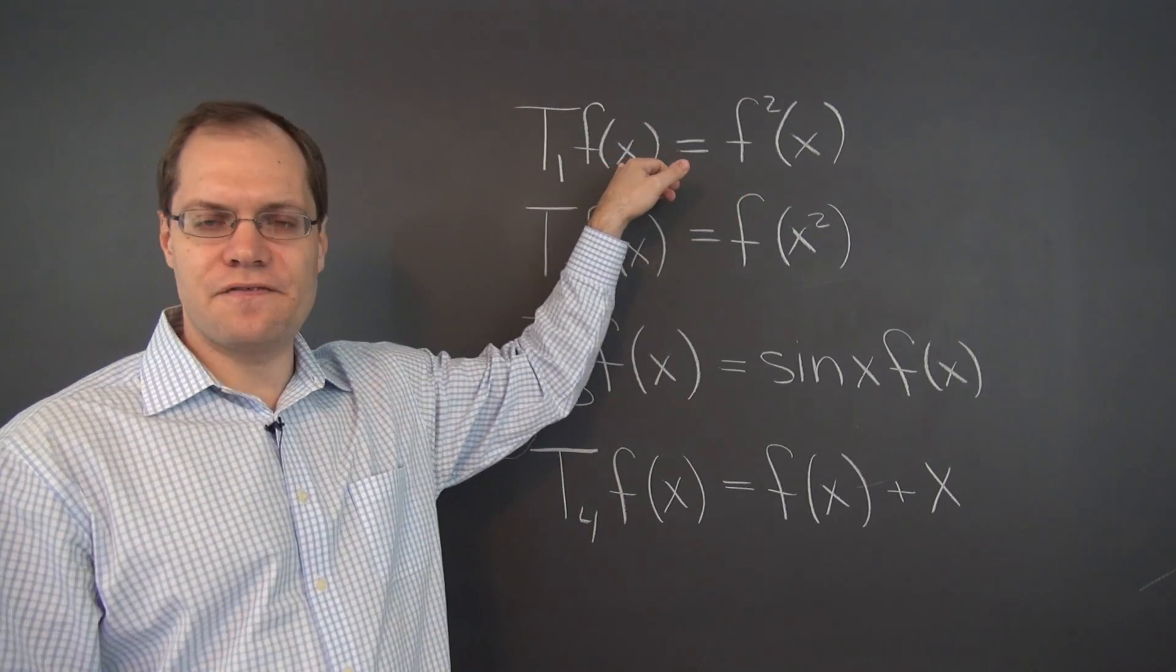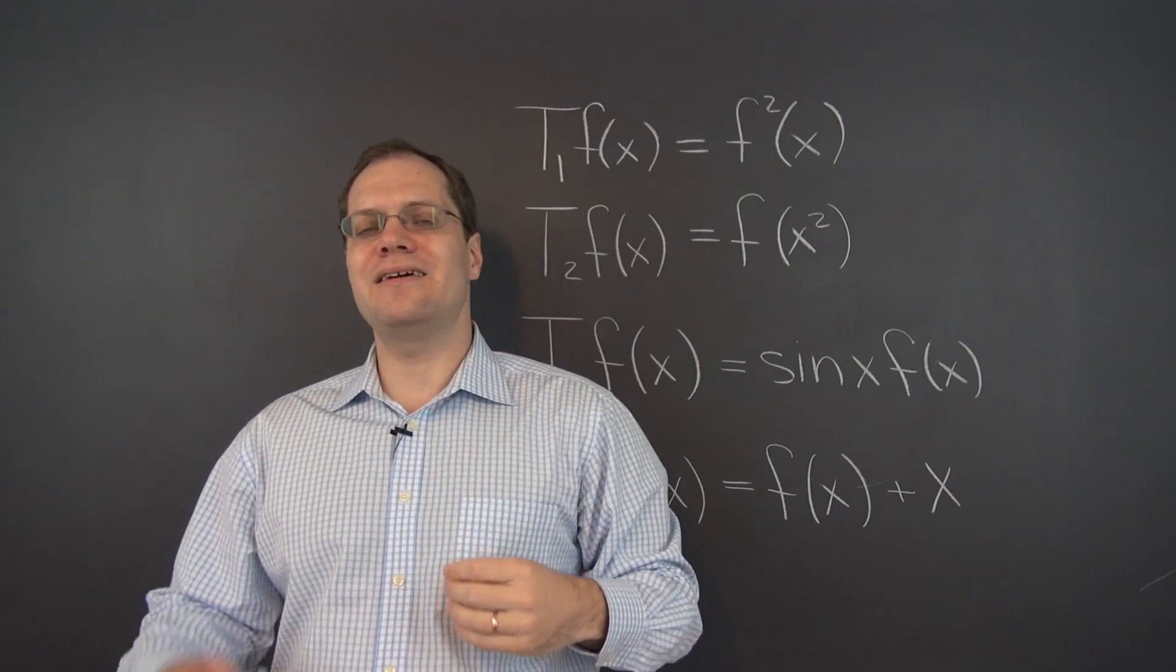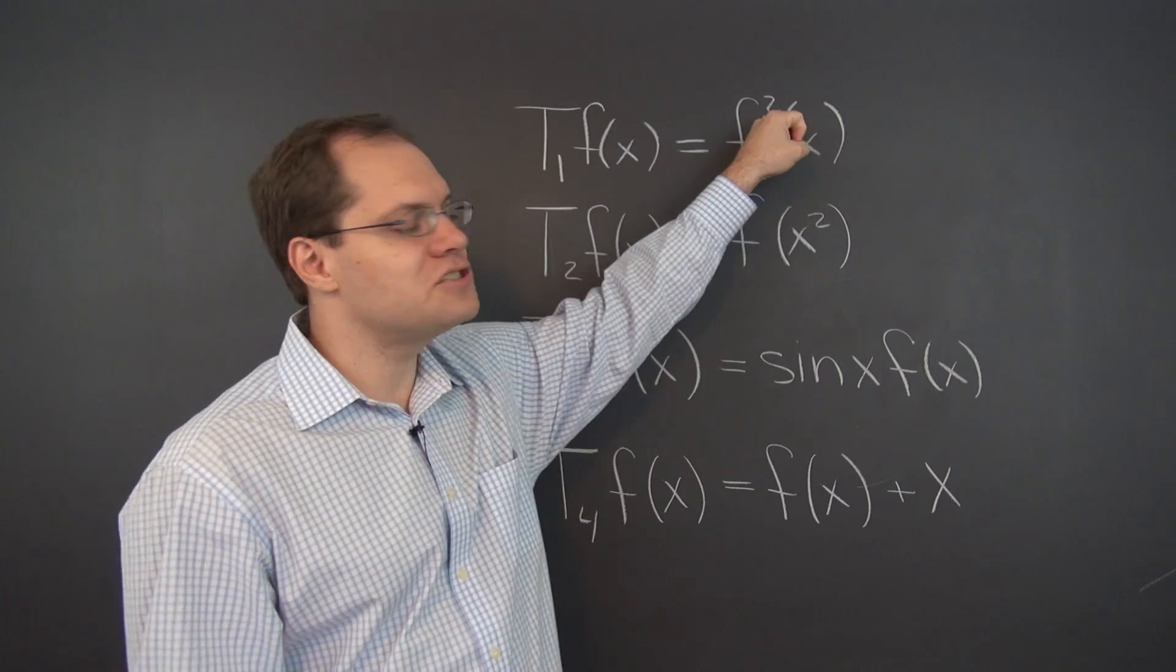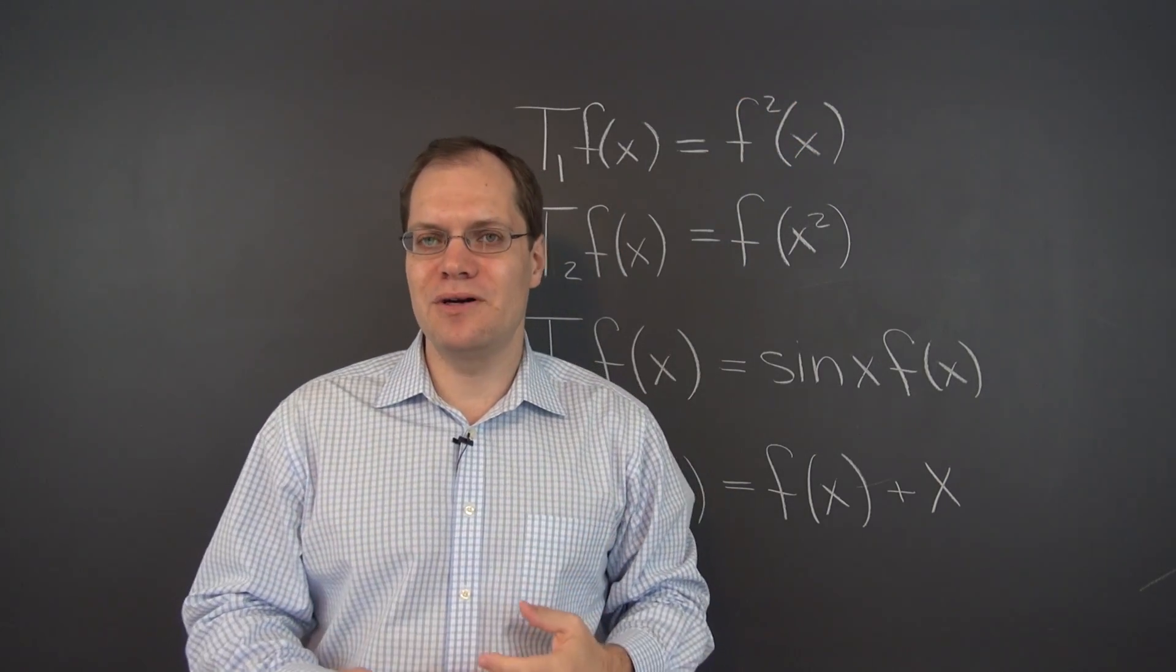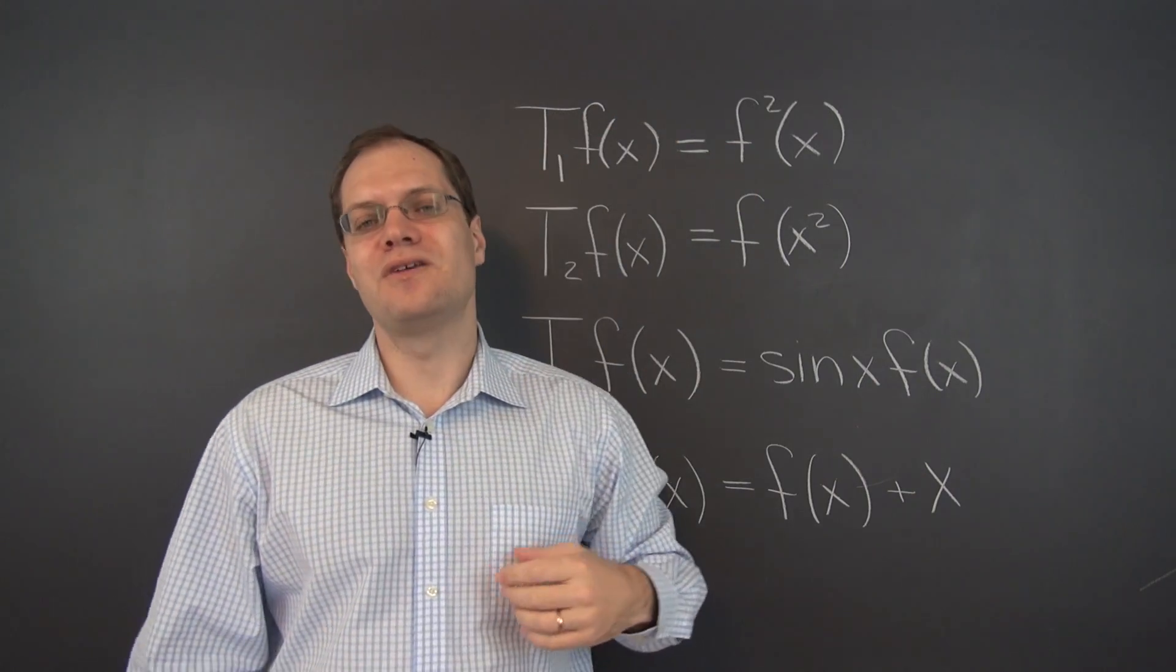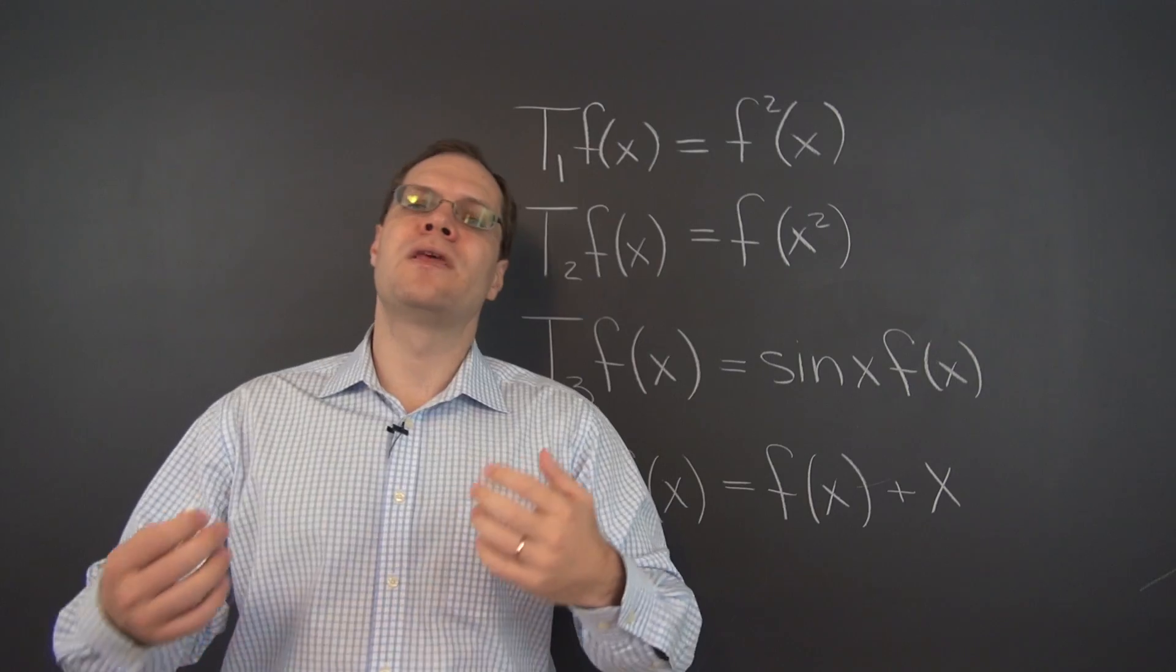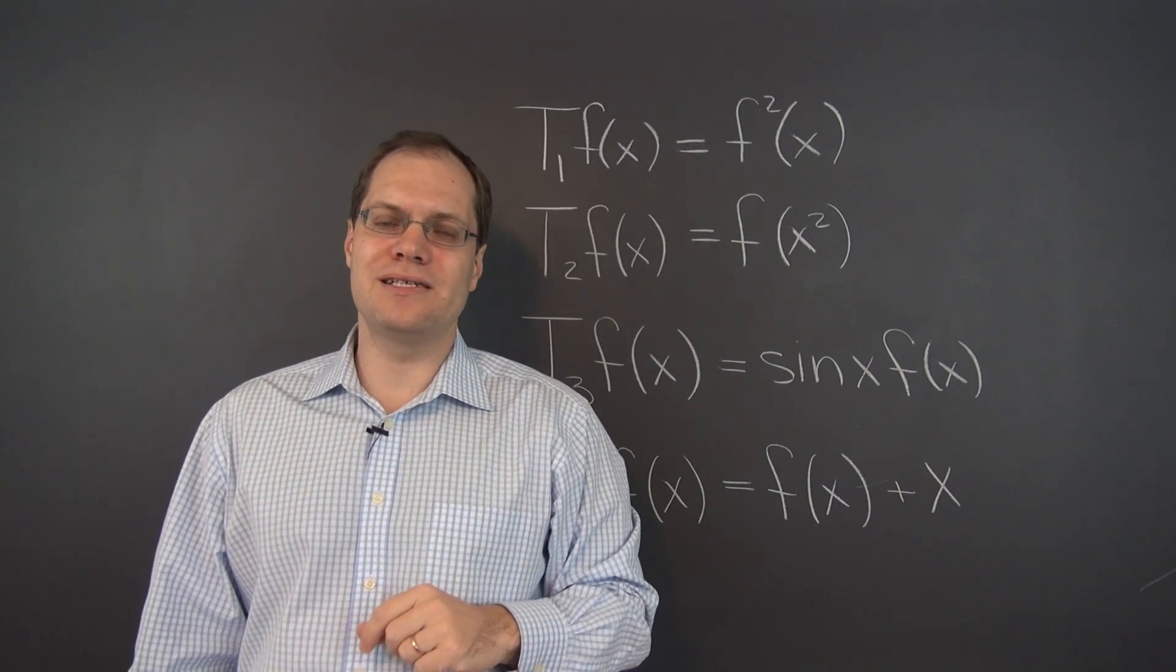Well the first one, the input is a function and the output is the function squared. And there's sort of a dead giveaway for non-linearity and it's the function being squared. So a function can be multiplied by a number or by another constant unchanging function but cannot be squared. You'll have to develop a little bit of intuition of what breaks linearity and what doesn't break linearity. And this sort of thing definitely breaks linearity.